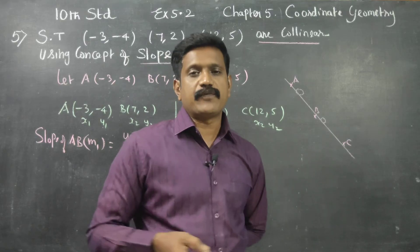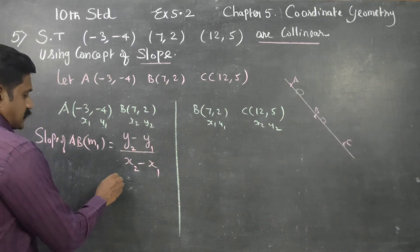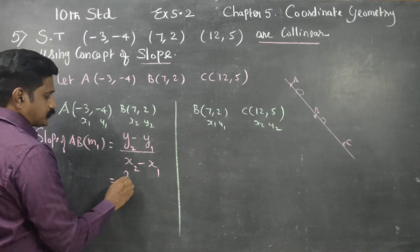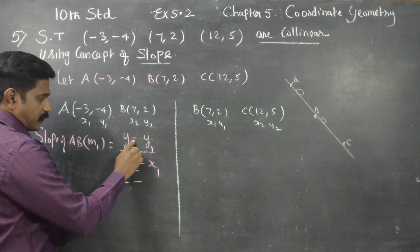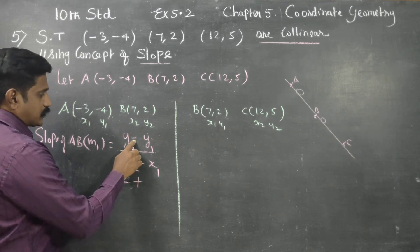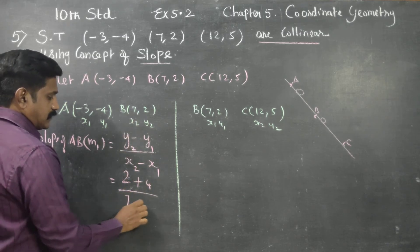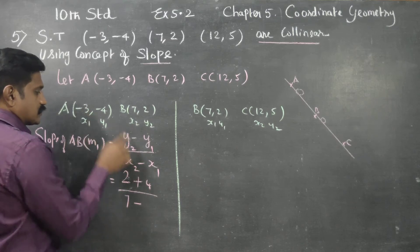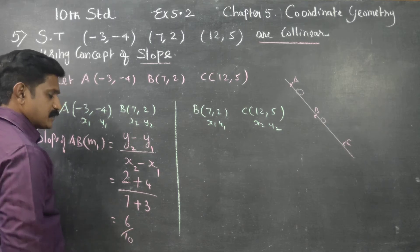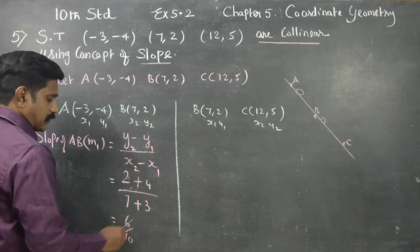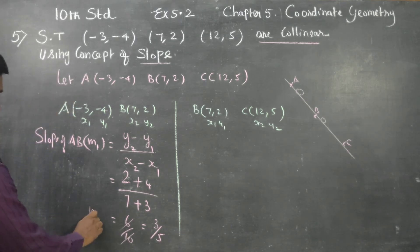Using the two-point formula, slope = (y2 - y1) / (x2 - x1). My y2 is 2, y1 is -4. So 2 minus (-4) gives plus 4 in the numerator. x2 is 7, x1 is -3, so 7 minus (-3) gives plus 3. That gives 6 by 10, which simplifies to 3 by 5. This is my m1, the slope of AB.